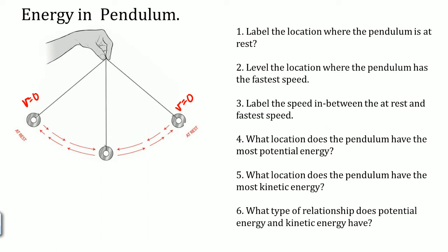Next, label the location where the pendulum has the fastest speed. In the middle, notice this is going to be where V max is. Label the speed in between the at-rest and the fastest speed — it's going to start off slow, then pick up. Velocity increases as it goes towards the center, because right in the middle is when it's V max.